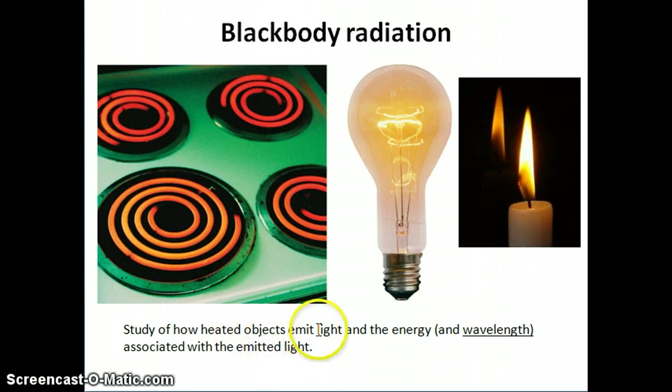So really black body radiation is the study of how heated objects, objects that are at a certain temperature emit light and the light have different wavelengths because the energy of this light is associated with the temperature of these objects. So the hotter temperature will have a certain color and will emit a certain color. And then the lower temperature object would emit a different color.